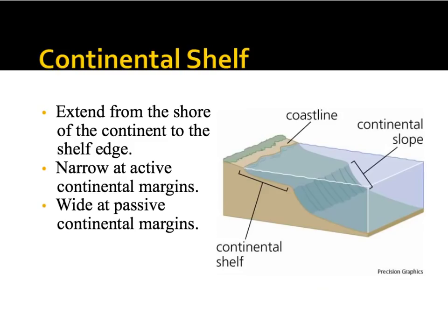Now we're talking about features of the ocean floor. Immediately at the coastline — like Virginia Beach — we have the continental shelf. This is the area from the coastline to the drop-off, also called the shelf edge. It is narrow at active continental margins and wide at passive continental margins.